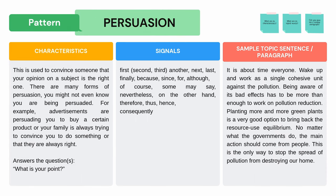Next pattern is Persuasion. This is used to convince someone that your opinion on a subject is the right one. There are many forms of persuasion — you might not even know that you are being persuaded. For example, advertisements are persuading you to buy a certain product, or your family is always trying to convince you to do something. It answers: What is your point? Example: It is about time everyone woke up and worked as a single cohesive unit against pollution. Being aware of its bad effects has to be more than enough to work on pollution reduction. Planting more green plants is a good option to bring back resource use equilibrium. No matter what governments do, the main action should come from the people. Notice any signal words that tell you it is a persuasion.